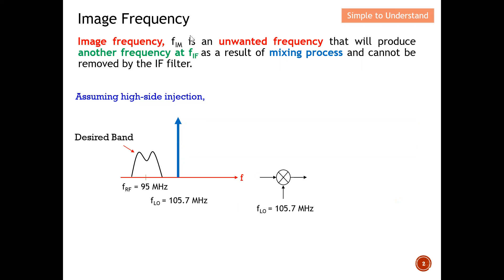Let's understand what image frequency is. Image frequency FIM is an unwanted frequency — we need to remove it. It will produce another frequency at FIF as a result of the mixing process and cannot be removed by the IF filter. The image actually occurs at the output of the mixer.